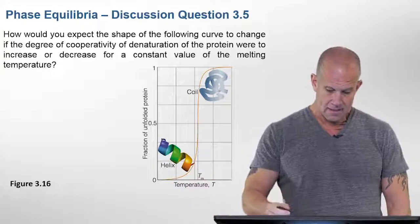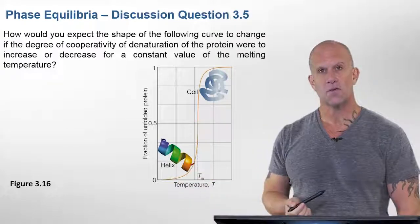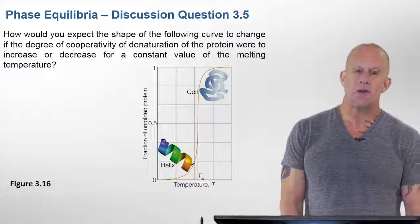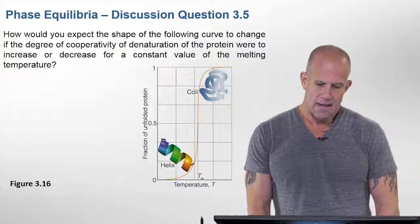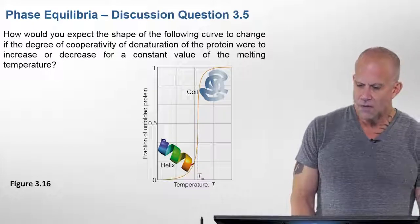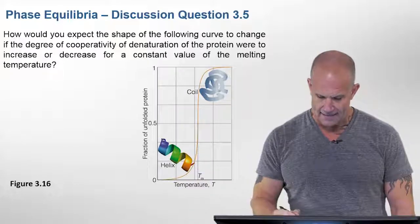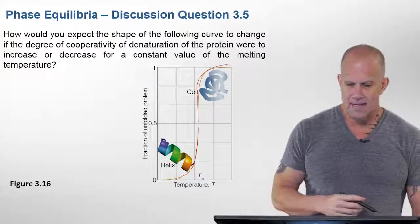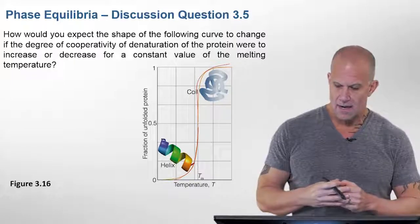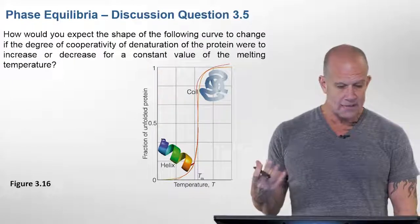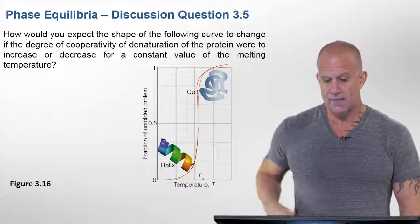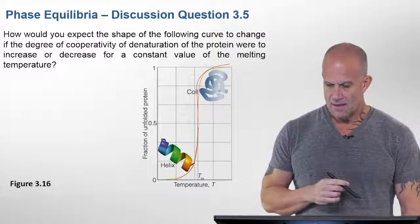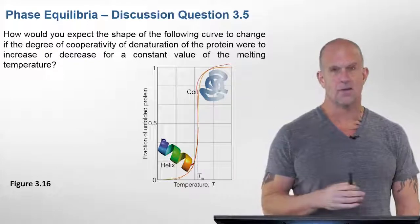And it's looking at the fraction of unfolded protein versus a specific temperature. This is figure 3.16 in Atkins book. And it's specifically asking, if you look at the shape of this curve, this kind of S-shaped curve here, if you change the degree of cooperativity with denaturization, would you expect it to increase or decrease for a constant value of the melting temperature?